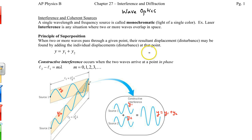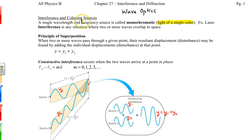We're going to start off by giving some definitions. We have monochromatic — you can think of 'mono' as single and 'chromatic' as color — so it's light of a single color, or constant frequency, or single wavelength. A good source that provides monochromatic light is a laser.